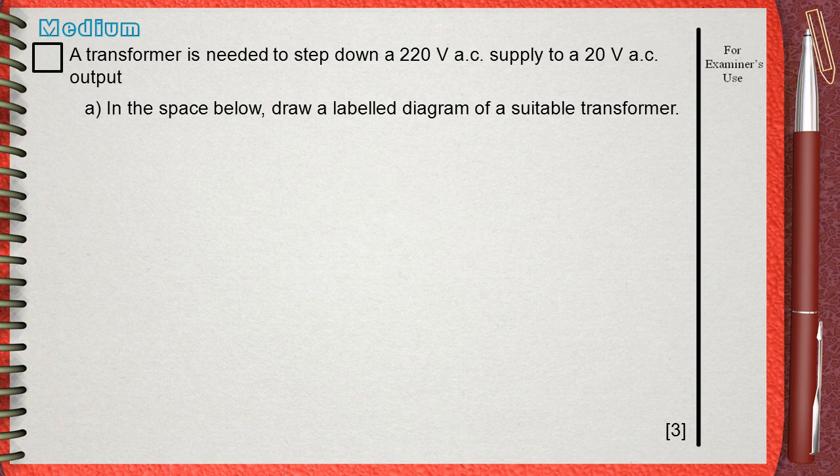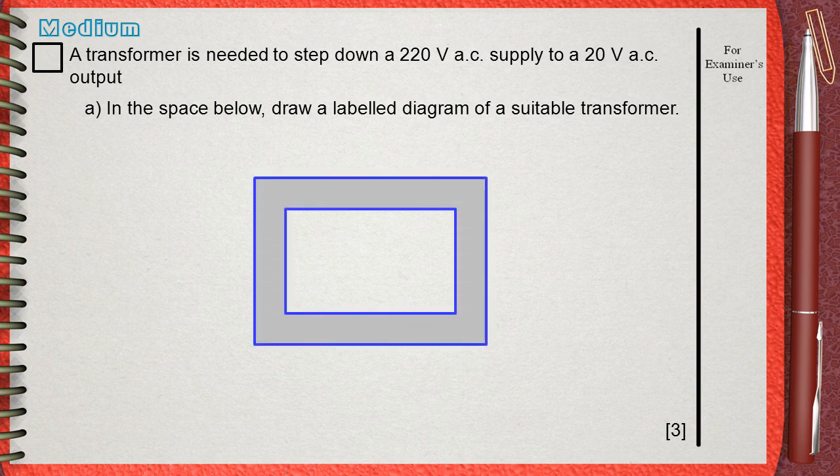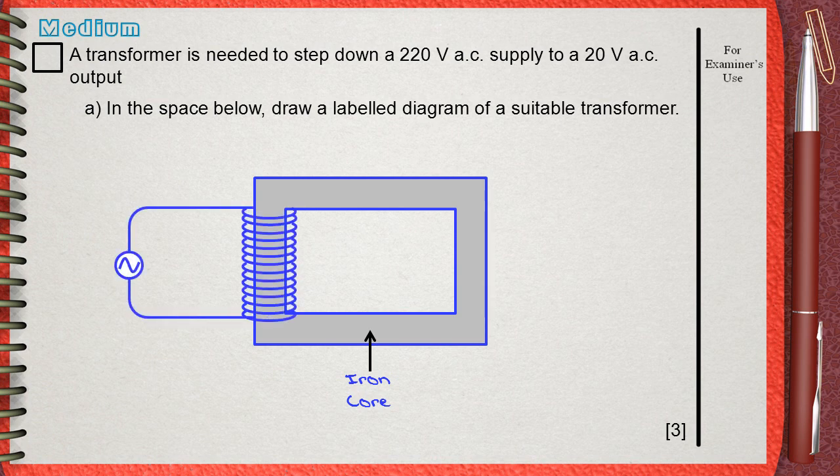The first thing to draw in the transformer is the rectangular iron core. On the left side of the core, draw the AC input that is applied to the primary coil.